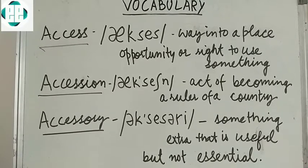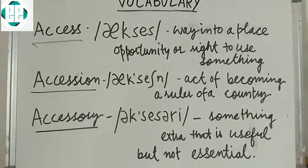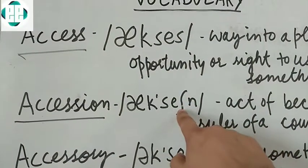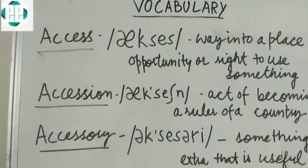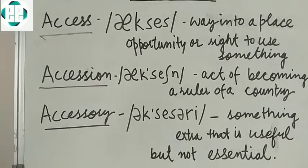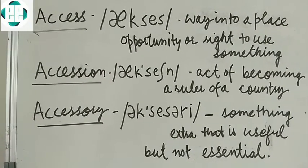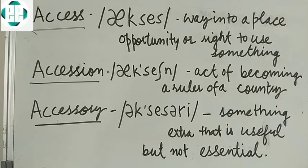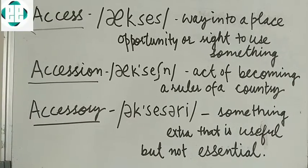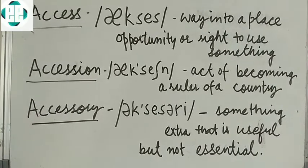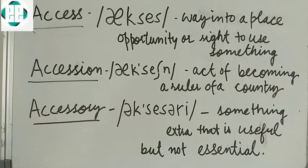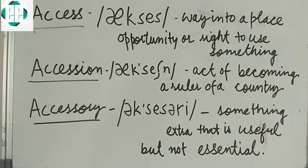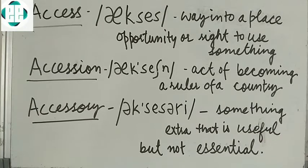The next word is 'accession.' Accession means the act of becoming a ruler of a country. As you can see here, this sign indicates the sound of 'sh,' as we use in 'she.' So whenever this sign appears, it will give the sound of 'sh.' The next one is 'accessory.' Accessory means something extra that is useful but not essential.